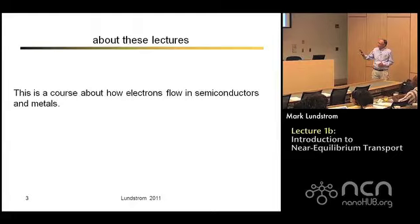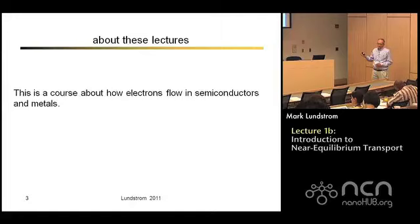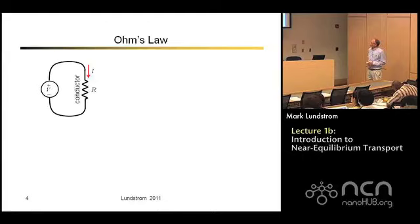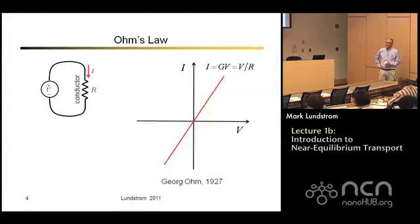The lectures I'm going to be talking about are very much about the material. Professor Dada talked about the fundamental concepts of how you think about electron flow at the nanoscale. These ten lectures are about how electrons flow in semiconductors, and a little bit in metals. You all know Ohm's law — we have a voltage source connected to a resistor, current flows, and the IV characteristic is a straight line. Current is conductance times voltage, or voltage divided by resistance.